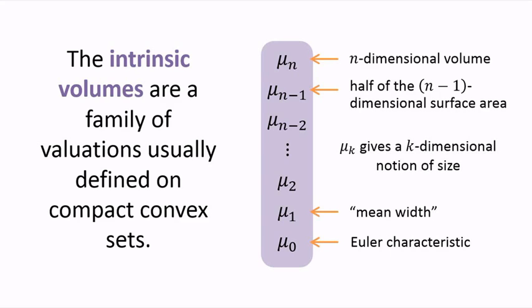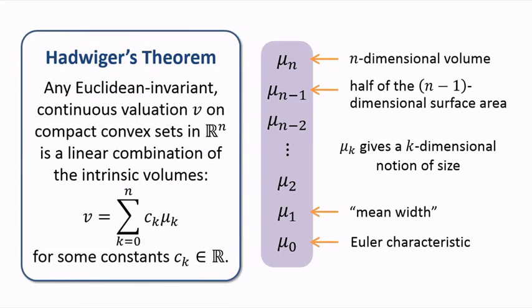The other intrinsic volumes are more difficult to convey, but suffice it to say that mu k provides a notion of the k-dimensional size of n-dimensional sets. Hugo Hadwiger proved that any Euclidean invariant continuous valuation on compact convex sets is a linear combination of the intrinsic volumes.